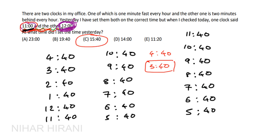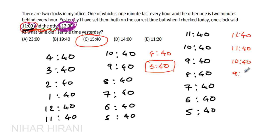For a quicker calculation: from 11:40, going 12 hours back is again 11:40, then from there going 8 more hours back gives 3:40. You don't need to count every hour individually. I hope I explained this high-difficulty question in simple language. Thank you.